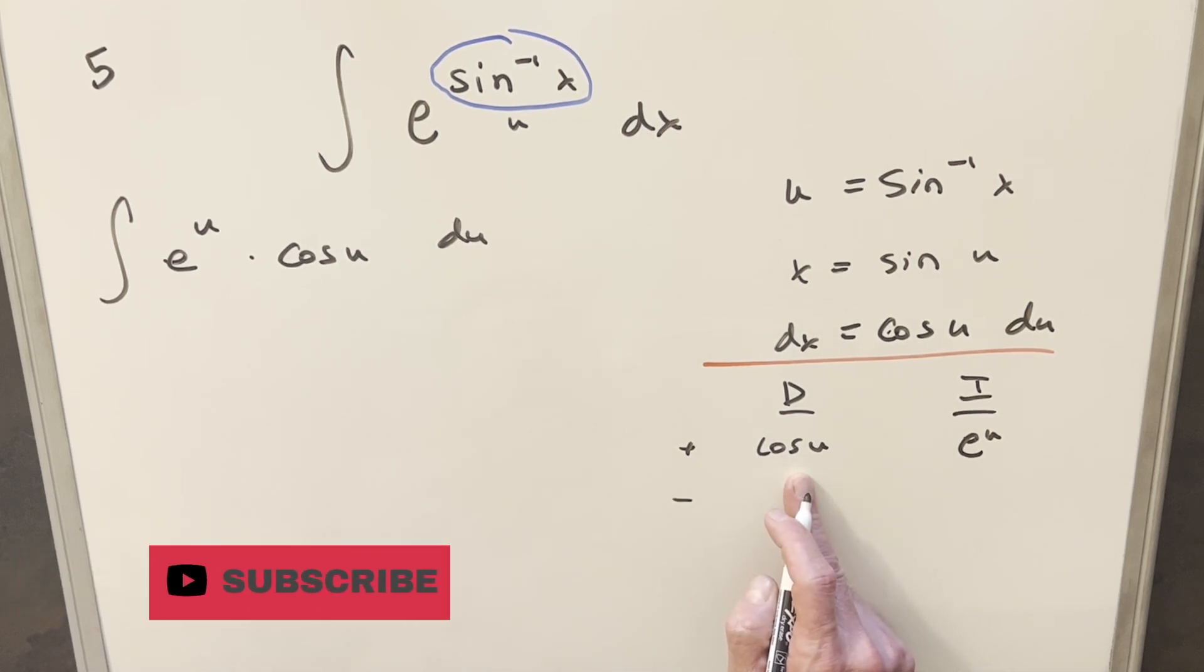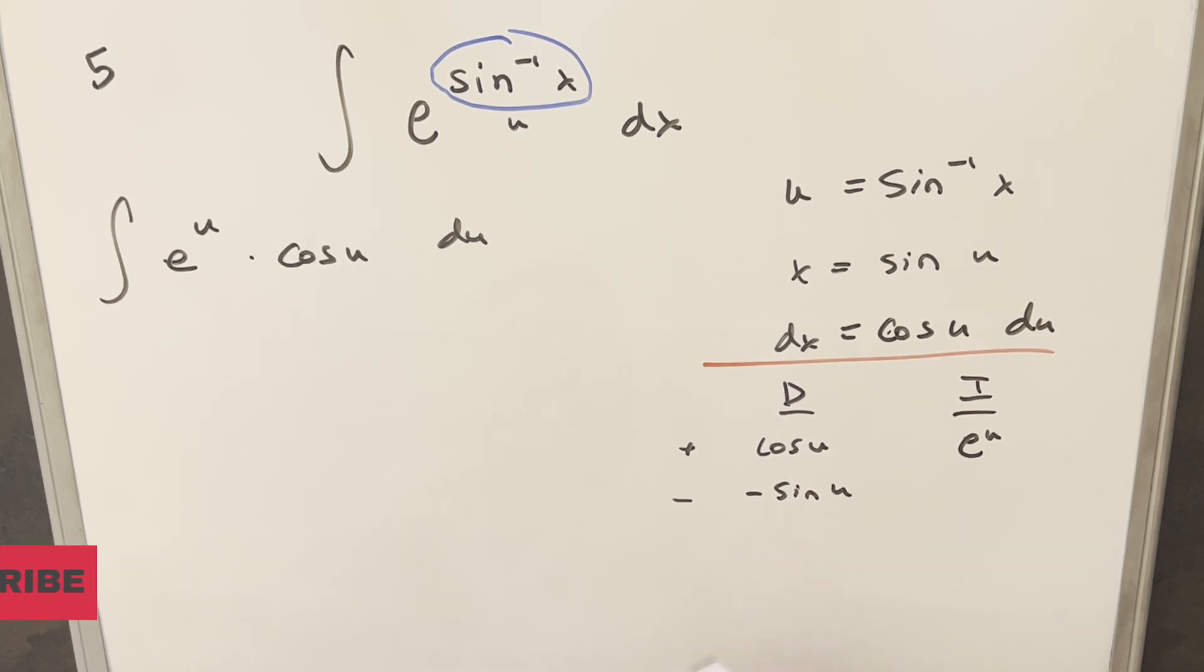Coming over here, I'll differentiate this. Derivative of cosine u is going to be minus sine u. Then let's do one more row. So when I take the derivative here, this is going to be minus cosine u. Then integral of e^u is going to be e^u. And then again, integral of e^u, e^u. And now, of course, I could continue, because this is going to go on forever, right? This never terminates.